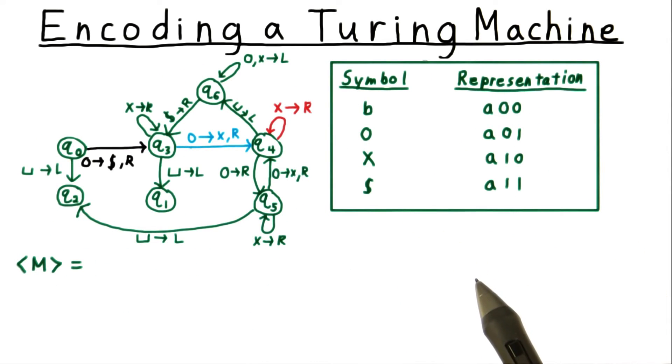Let's see an encoding for an example. This example decides whether the input consists of a number of 0s that is a power of 2. To encode the Turing machine as a whole, we really just need to encode the transition function.